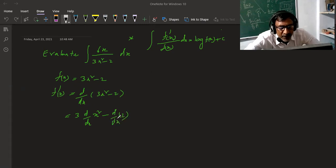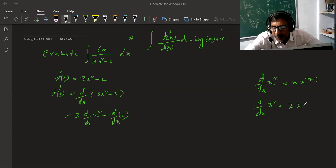The constant derivative is zero. The derivative formula: d by dx of x power n is equal to n into x power n minus 1. So d by dx of x square is equal to 2 x power 2 minus 1, that is equals to 2 into x power 1.